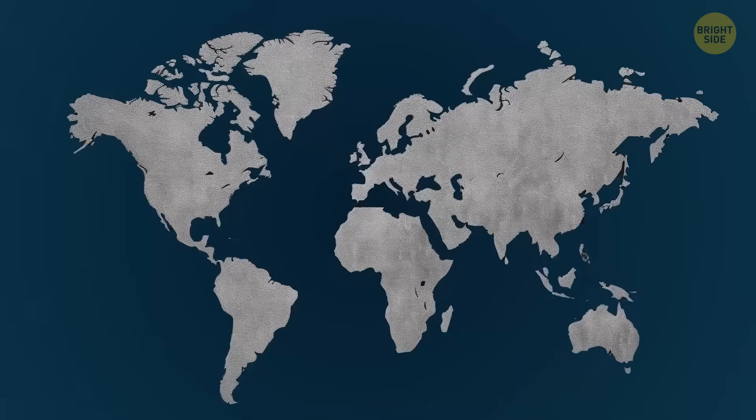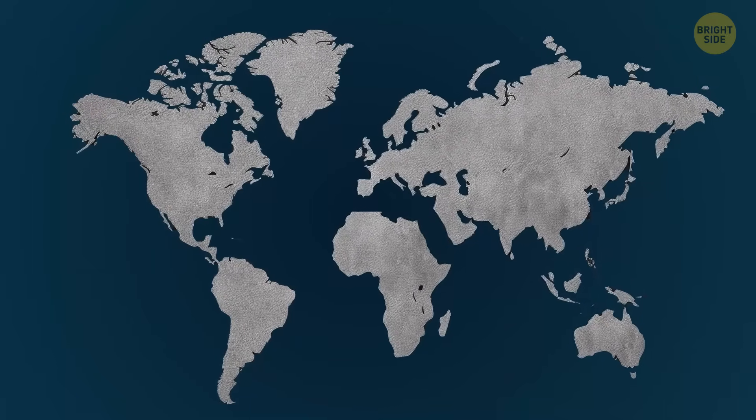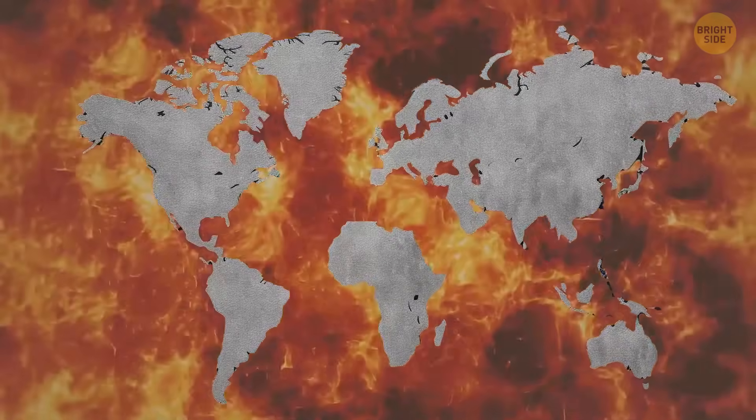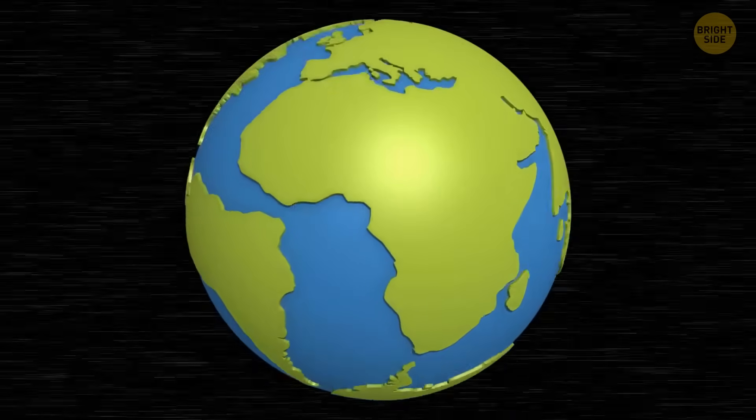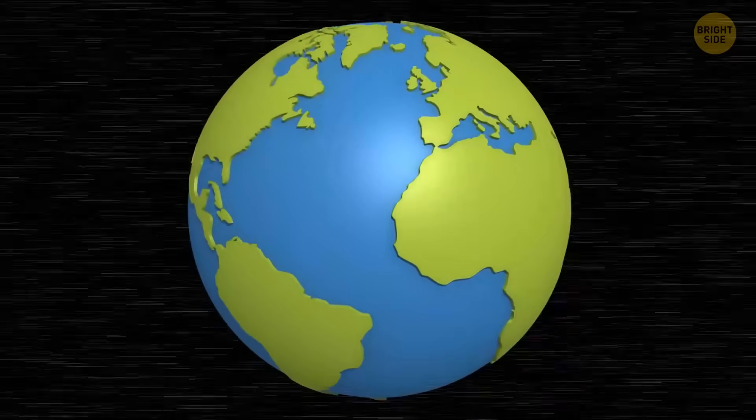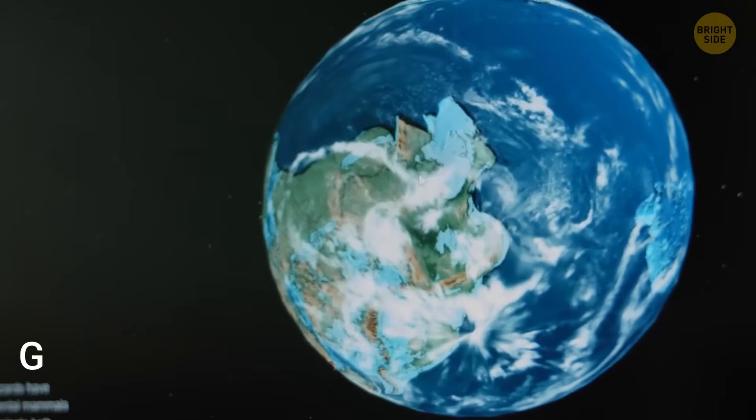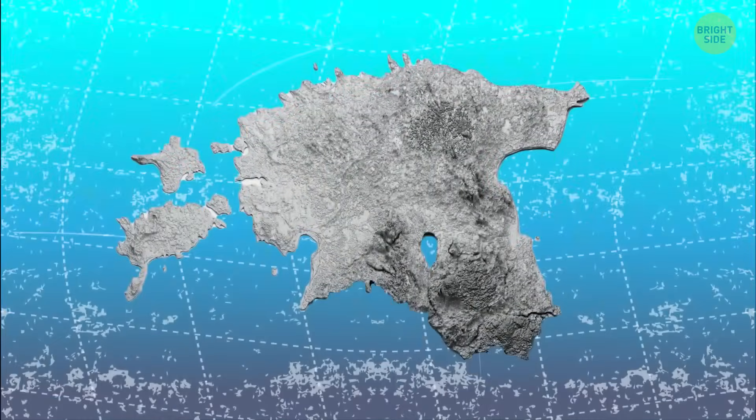You see, the continents on our planet are moving constantly, sliding along the red-hot lava mantle like cereal on milk. Over history, they came together and broke apart several times. Hundreds of millions of years ago, several continents were a part of one enormous Gondwana. Antarctica was one of them.